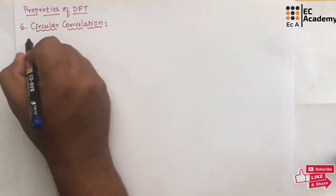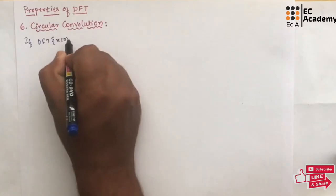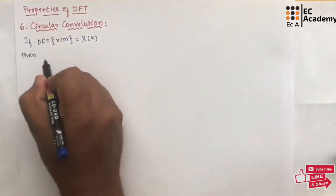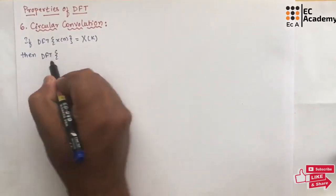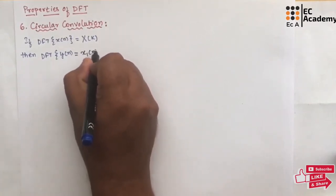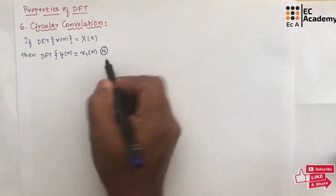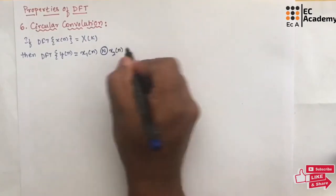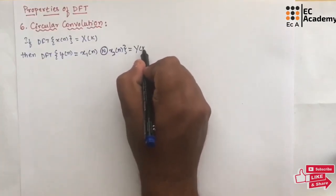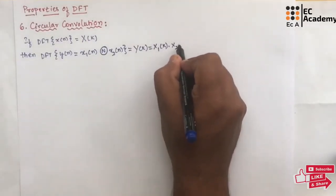Let us write the statement. If DFT of X(N) is equal to capital X(K), then the DFT of Y(N), which is a new sequence, will be equal to X1(N) circularly convolved with X2(N), and that will be equal to Y(K), which can be written as X1(K) into X2(K).